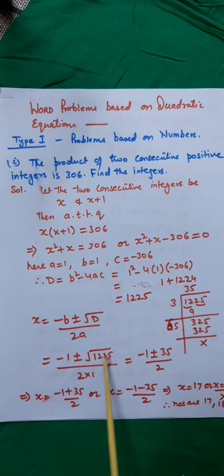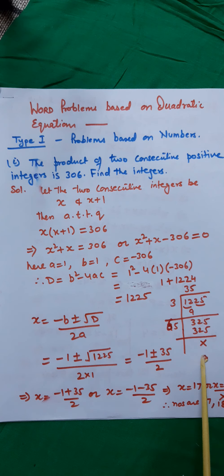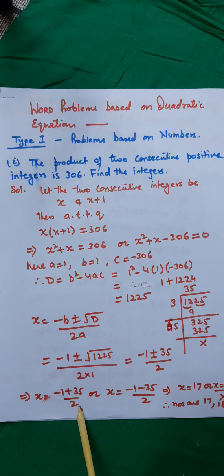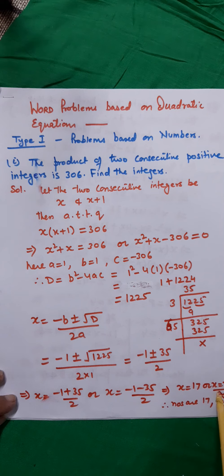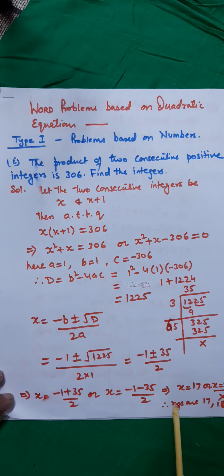Putting all values: x = (−1 ± √1225) / (2×1) = (−1 ± 35) / 2. The ± sign means we solve once with plus and once with minus. So x = (−1 + 35)/2 = 17, or x = (−1 − 35)/2 = −18. We cannot take −18 since the numbers must be positive integers, so we discard it. Hence x = 17 and the next integer is x+1 = 18. The two consecutive integers are 17 and 18.